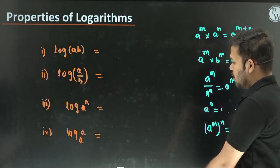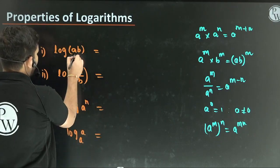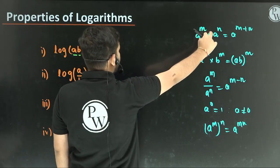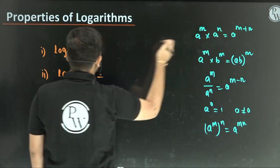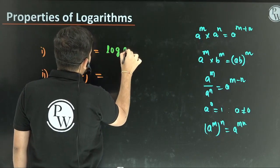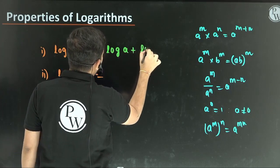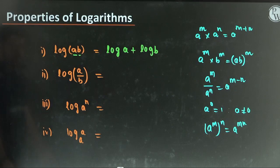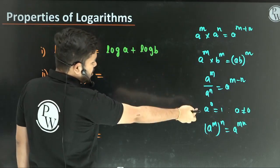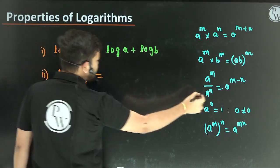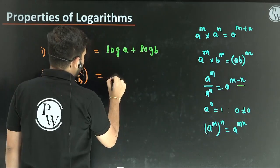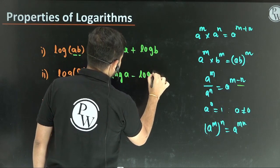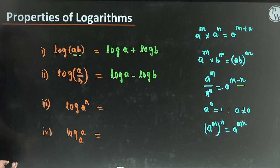So how do we write log with multiplication? When there are two multiplications, we convert them to a sum — same logic. Log of argument A into B cannot be written as log A into log B. It is log A plus log B. Similarly, division in the argument means we subtract. Here also, log A divided by B equals log A minus log B.